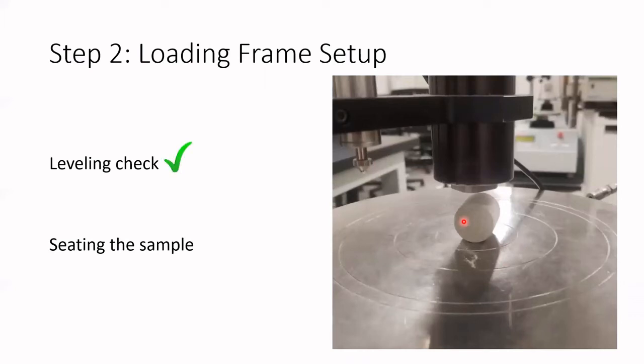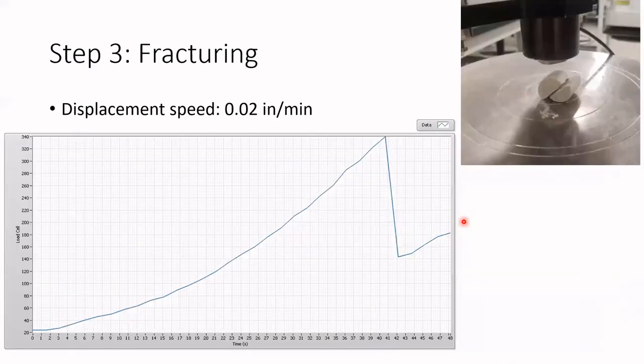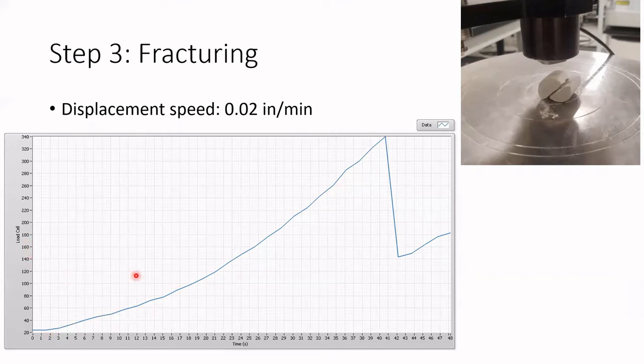For the fracturing, we are going to keep moving up the lower part of the frame and we are going to observe an increase in the load that we are applying. This load is going to reach a maximum and then it's going to have a drop when the rock fails. After the data analysis, we can see a video where we are applying strength on the sample until it fractures.